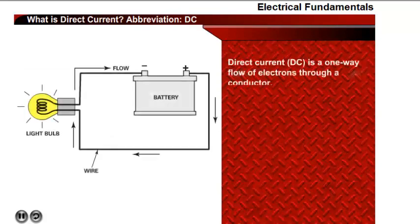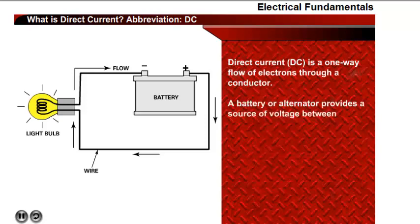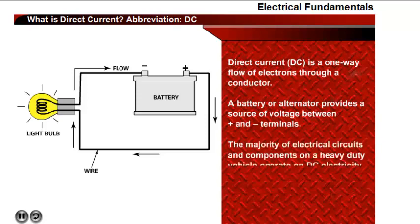Direct current, or DC electricity, is a one-way flow of electrons through a conductor. A battery or alternator provides a source of voltage between the positive and negative terminals. The majority of electrical circuits and components on a heavy-duty vehicle operate on DC electricity.